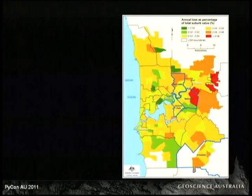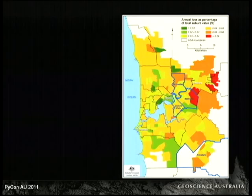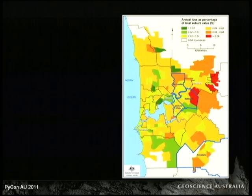Here's an example of output that Geoscience Australia has produced — the annual loss due to earthquakes as a percentage of total suburban value for suburbs in the Perth region. It's complex output that requires many complex steps: developing a set of synthetic earthquakes representing a 500-year period, working out ground shaking in all houses, working out the damage to each house, calculating how much each damage would cost, and then aggregating all that information.